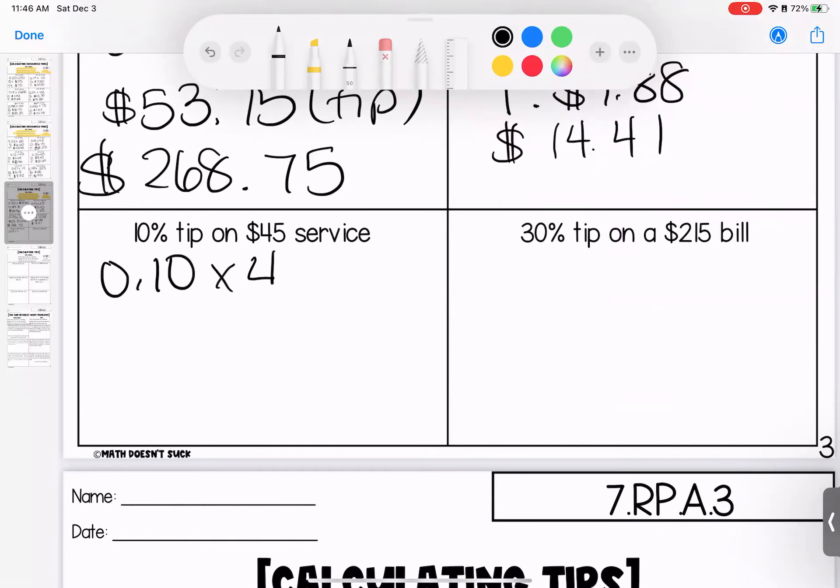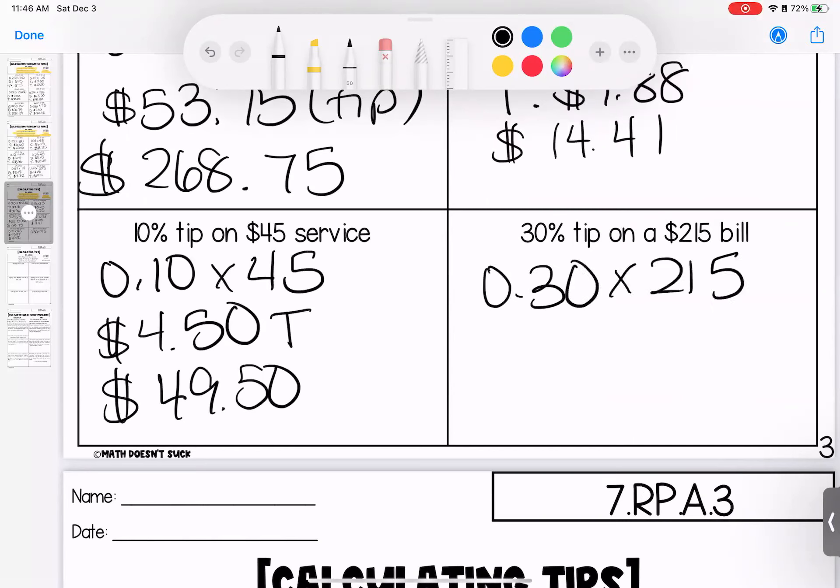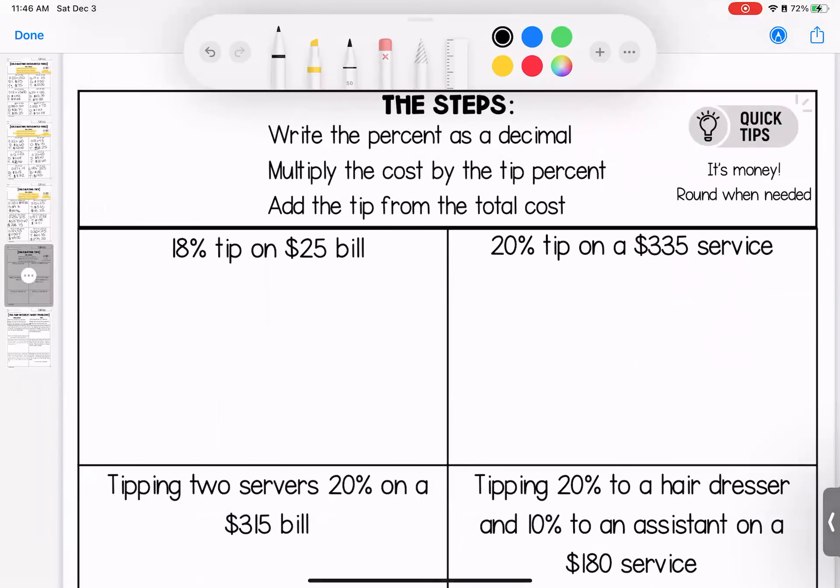A 15% tip on a $12.53 bill. My tip is $1.88. My total is $14.41. This is a great reminder of how percentage can change based on what we have. Looking at percentage can be really helpful in helping us see the difference. And we're going to compare a couple of these at the end. A 10% tip on $45. Remember the magic of 10. Slide it. $4.50 is my tip. $49.50 is my total.